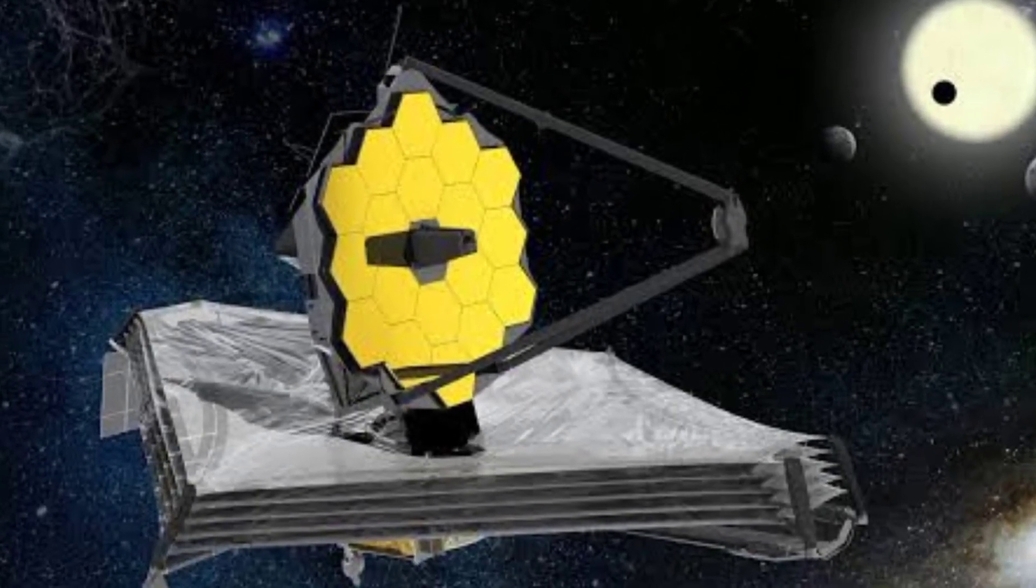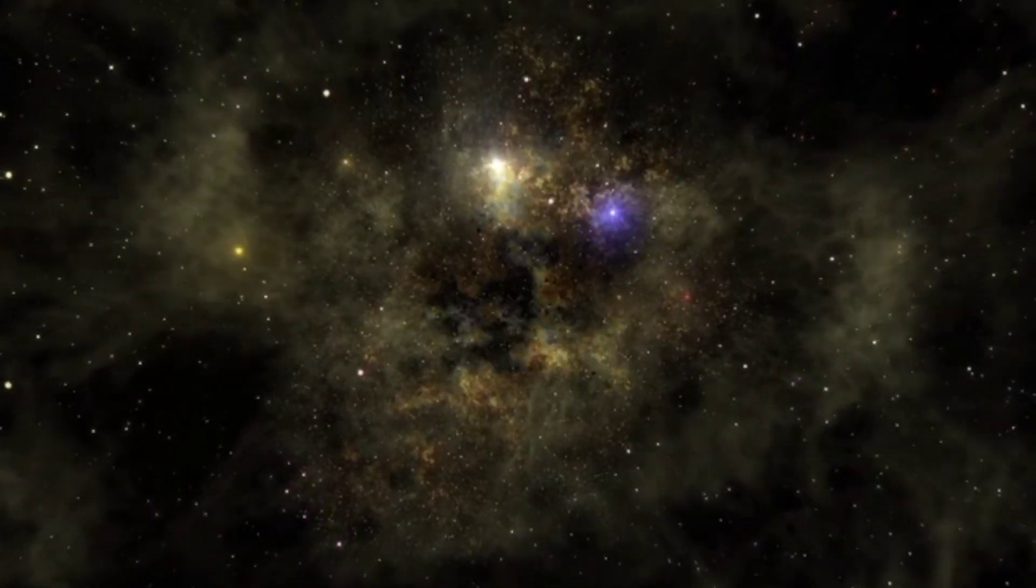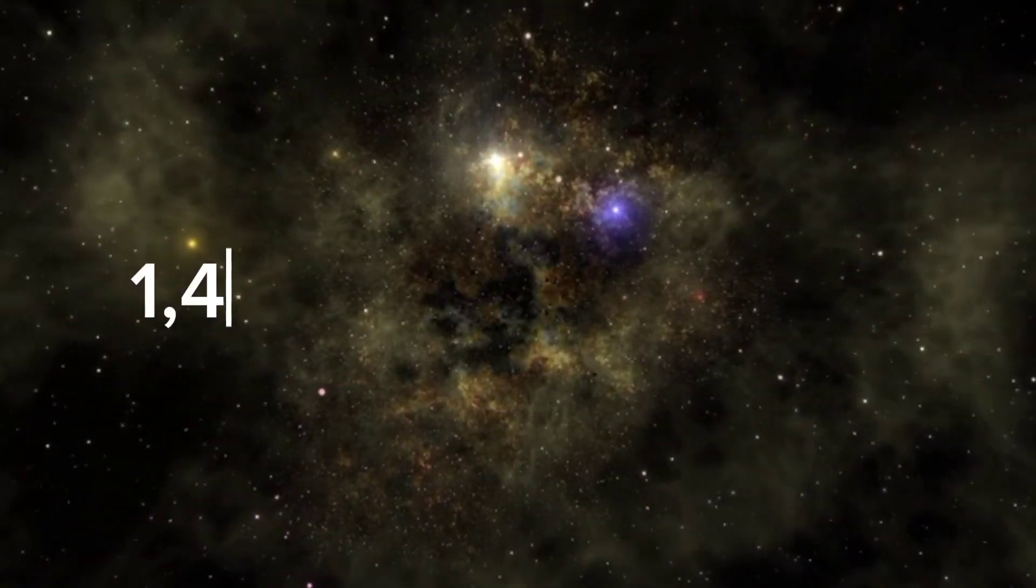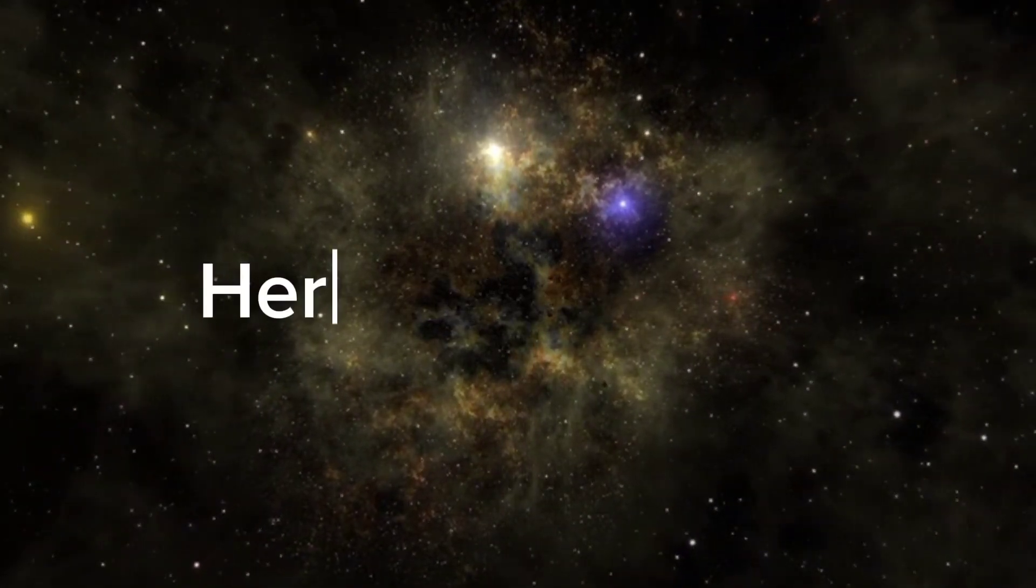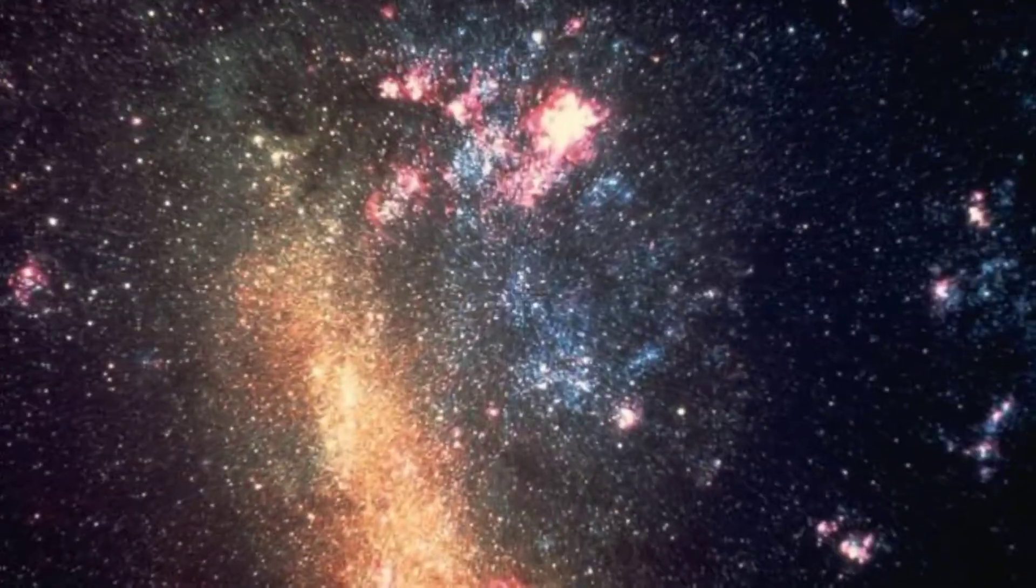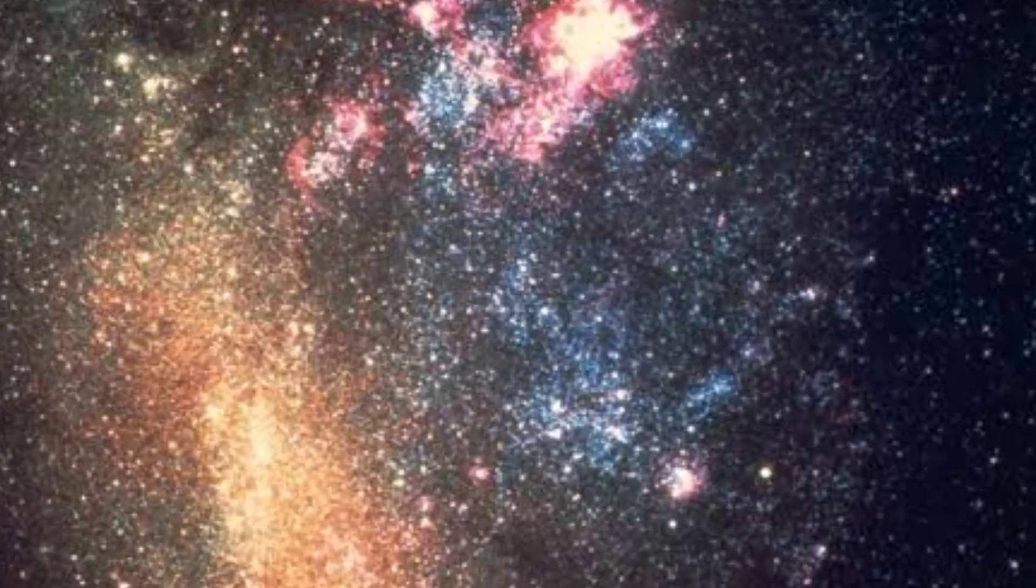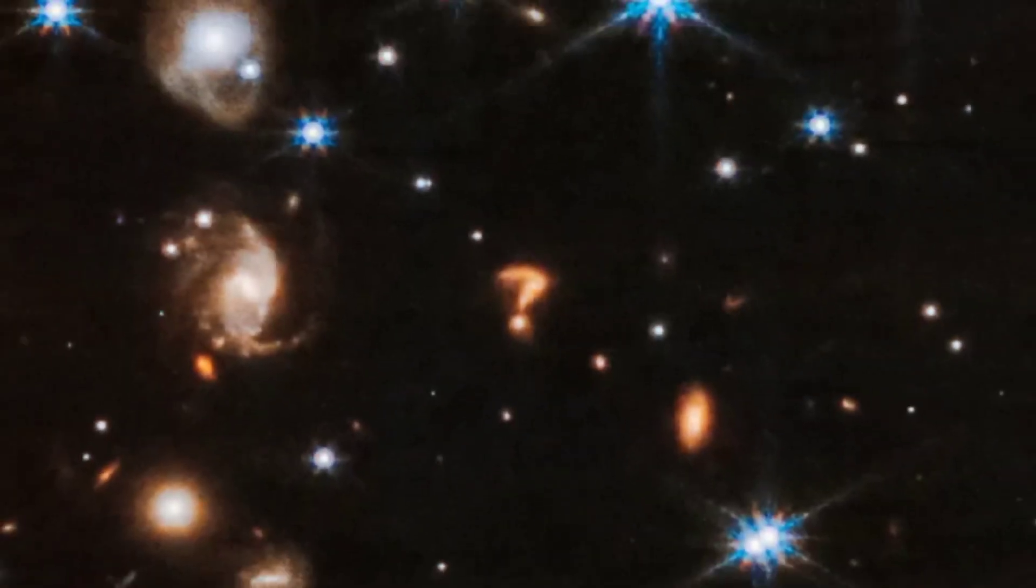NASA's James Webb Space Telescope has taken a stunning picture of a young star system some 1,470 light-years away, called Herbig-Haro, comprised of two nascent stars caught in a tight embrace as they spin around each other.